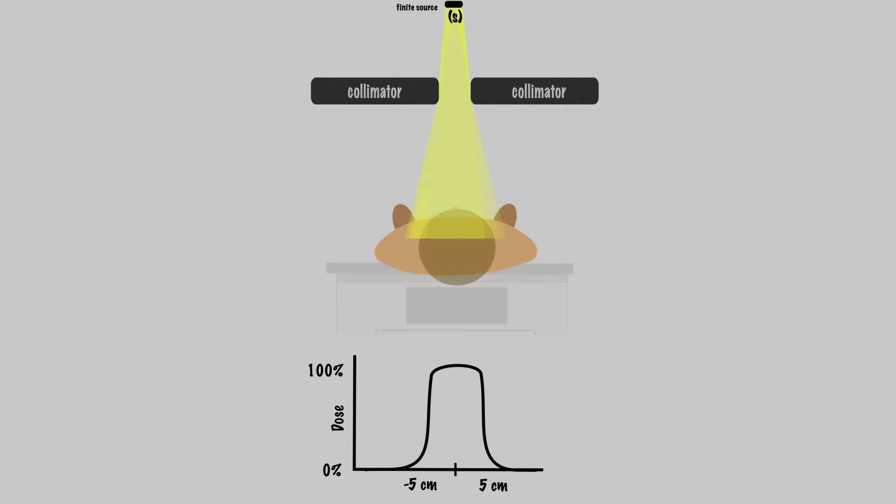Now let's take a look at how geometric penumbra changes with source size, SSD, and SCD. You'll see that S projects down here through the edge of the collimator and diverges. If we set up the patient here, there's going to be some penumbra with W. If the source was small, as in our idealized scenario, the penumbra would be small. As we increase the size of our source, the penumbra increases.